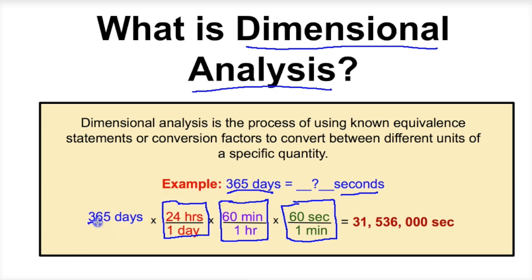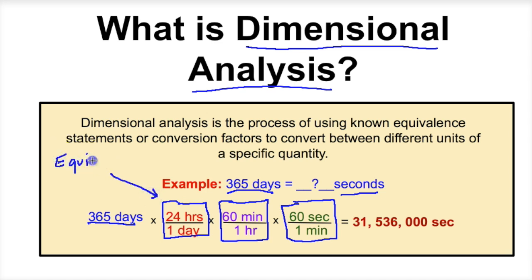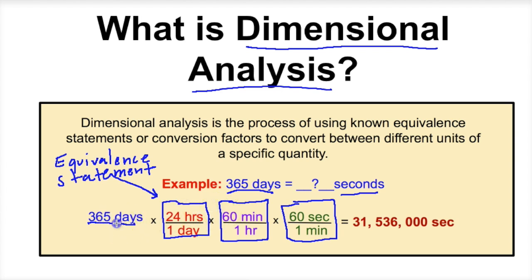So we're starting off with 365 days. We want to cancel out the unit day, so we're going to put that unit on the bottom of this equivalent statement. We're going to first break this day down into hours. We know that there are 24 hours in one day — this is called an equivalent statement. You can basically think of an equivalent statement as a conversion factor expressed as a fraction. The unit day on top will cancel out with the day on the bottom, leaving us with hours.